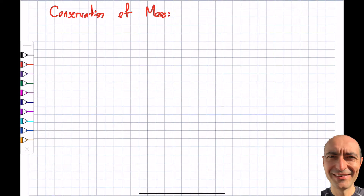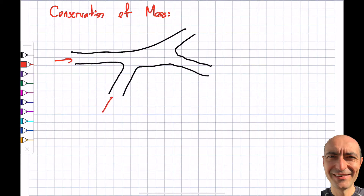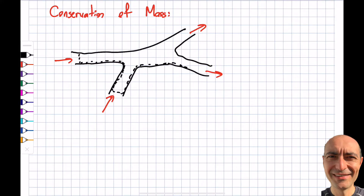Let me draw an arbitrary system. Let's say I have two inlets and two exits. This can be pistons or syringes, if you think about it — pushing and pulling. I can put a piston here, fluid can move here and there, I can have some kind of an open piston and fluid can come out of it.